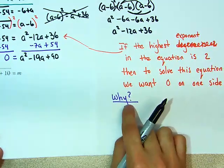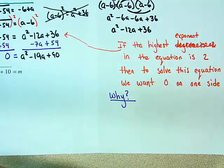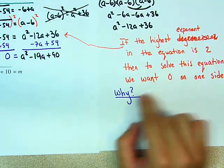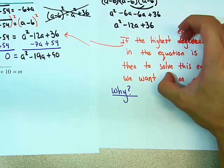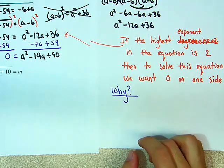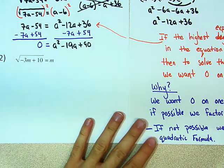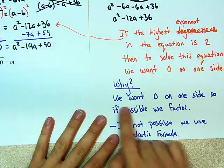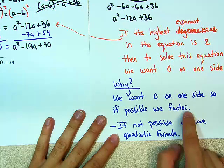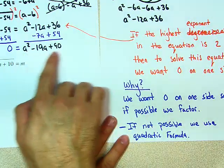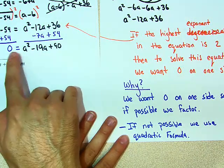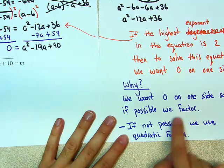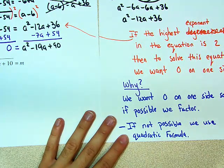Now, what's the reason? Why do we want 0 on one side? I'm going to pause the video. I want you to think about it. Why do you want 0? Why is this the thing that we want to do? Because if we have 0 on one side, we want to see if we can factor this. If this is factorable, then it's easier to solve this equation. If you can't factor, then we use quadratic formula.